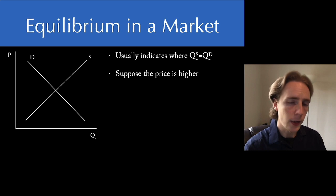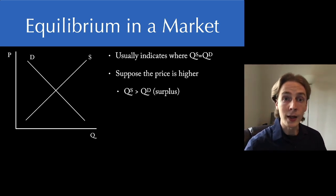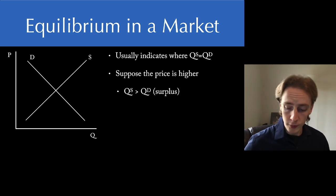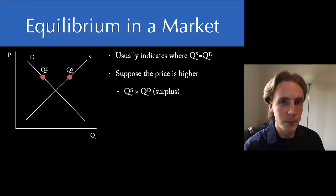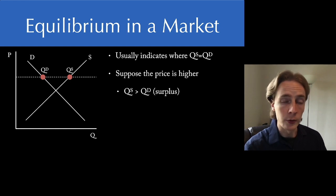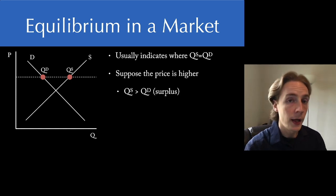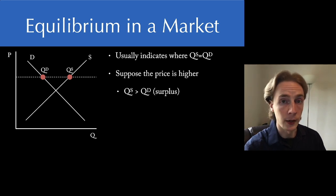So why is this an equilibrium? Imagine a situation where the price was not at that intersection point. If the price was too high, we have a situation where the quantity supplied is much higher than the quantity demanded. More people are willing to provide this good or service than there are people willing to buy it at that price. We're going to call this a surplus — a disequilibrium situation where not everything being produced is getting sold.